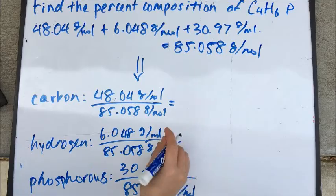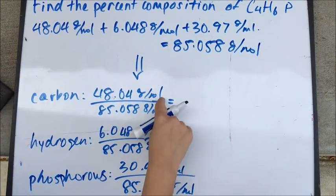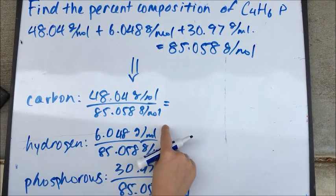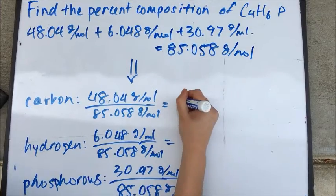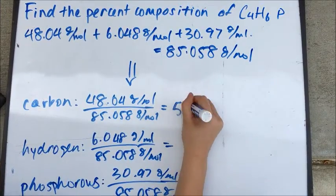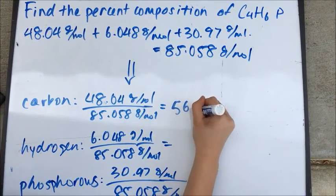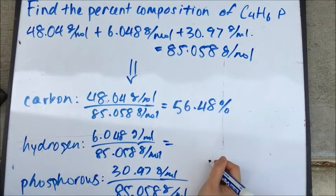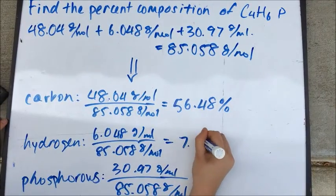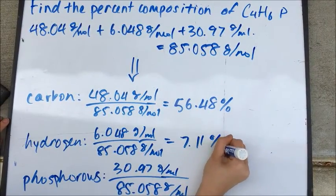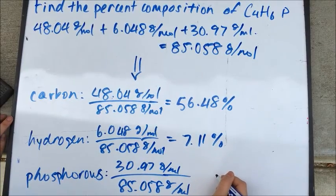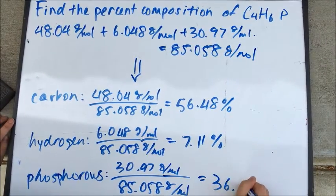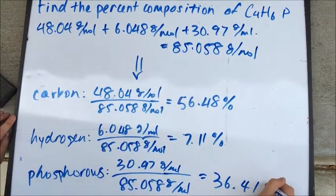Then divide the individual atomic mass of each element by the total. For carbon, you get 56.48%. For hydrogen, you get 7.11%. And for phosphorus, you get 36.41%.